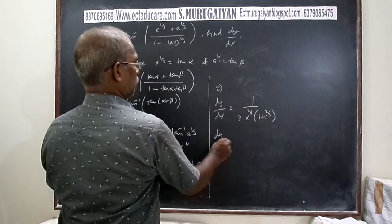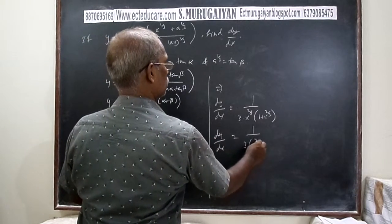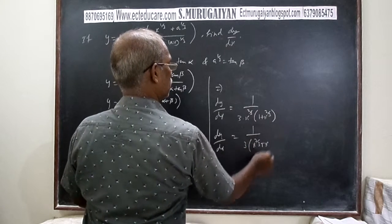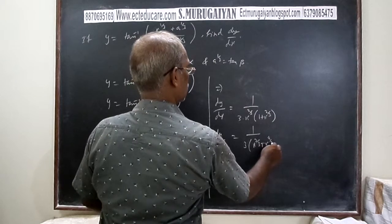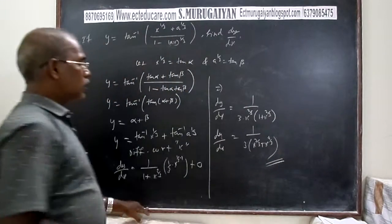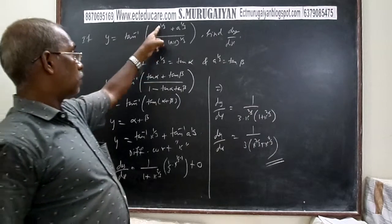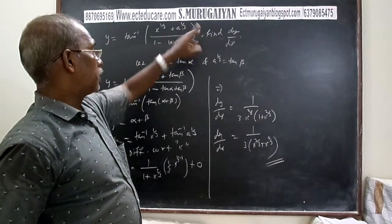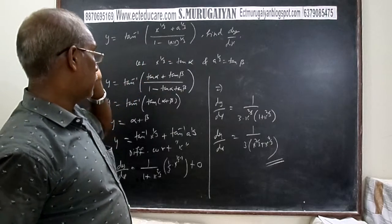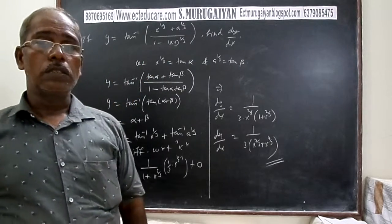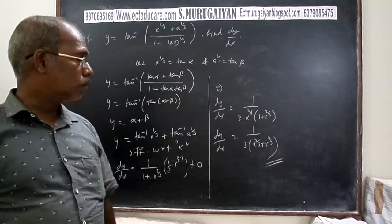Therefore dy/dx = (1/3) · x^(-2/3) / (1 + x^(2/3)) = 1 / (3x^(2/3)(1 + x^(2/3))). This is the derivative of y = tan⁻¹((x^(1/3) + a^(1/3)) / (1 - ax^(1/3))). Keep watching — we will discuss one more question.